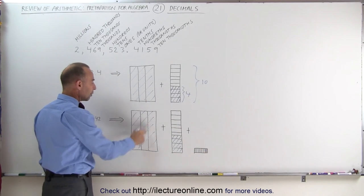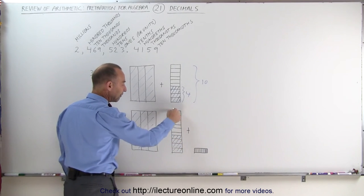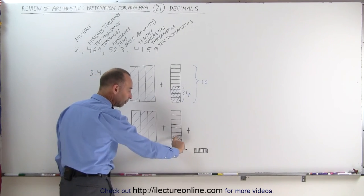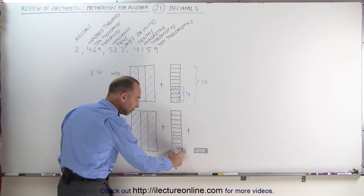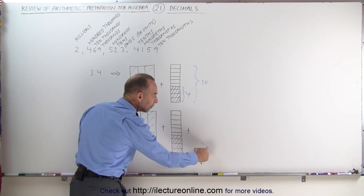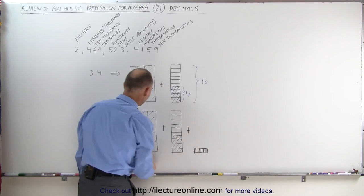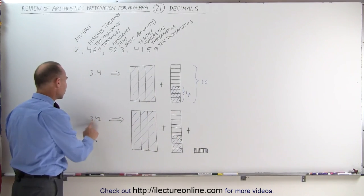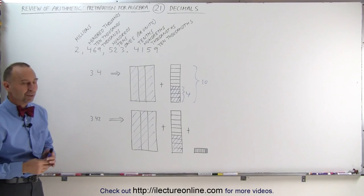So 3.42 means you have 3 whole units. You have 4 tenths of a unit, or if you divide a unit into 10 equal pieces, you have 4 of them. And then you take one tenth of those, of one tenth piece, divided into 10 equal pieces. Those are now hundredths, and we have 2 of those. 2 one hundredths, 4 tenths, and 3 whole units is written as 3.42. That's what we mean by a decimal.